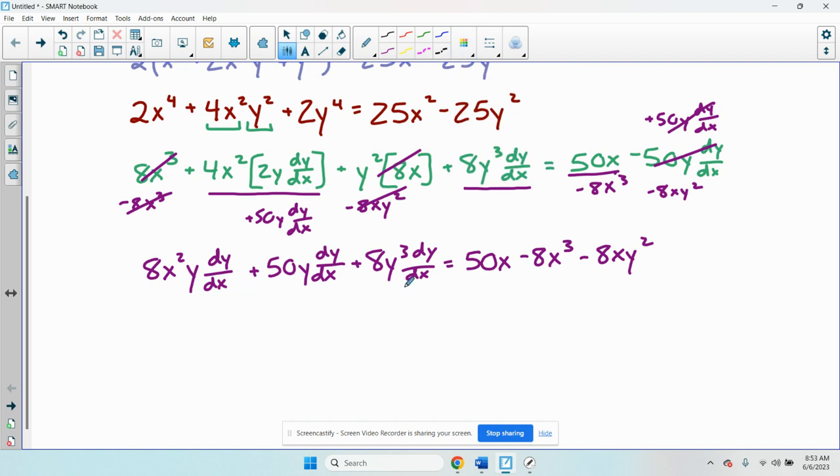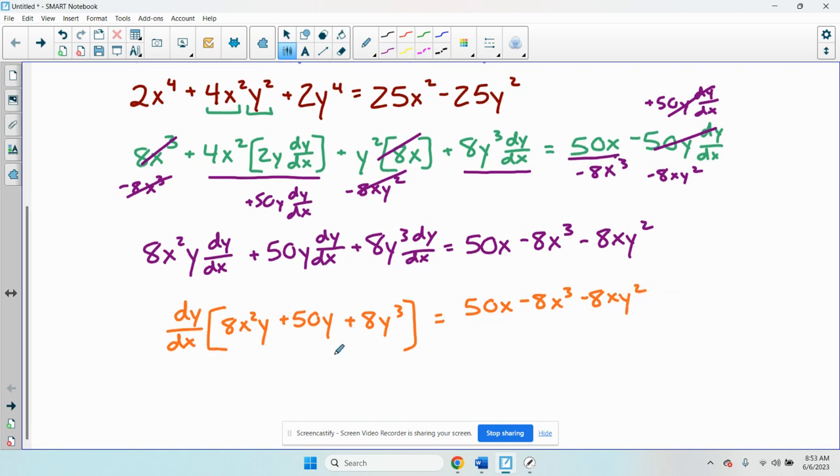Now I'm going to factor out a dy dx from every term on the left hand side because my goal is to get the dy dx by itself. 8x squared y plus 50y plus 8y cubed equals 50x minus 8x cubed minus 8xy squared.